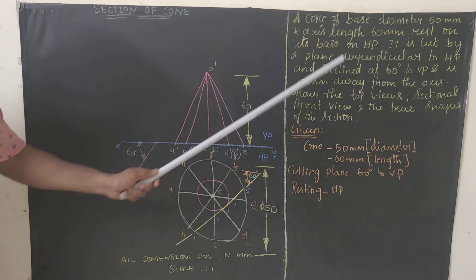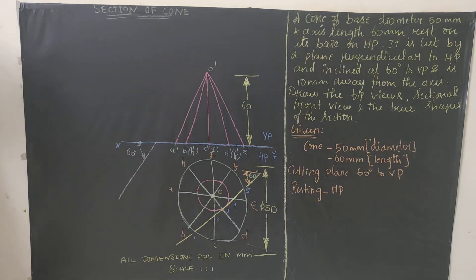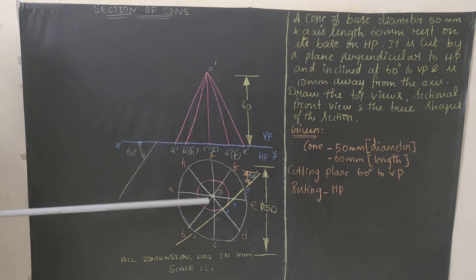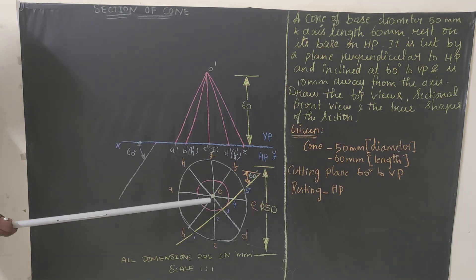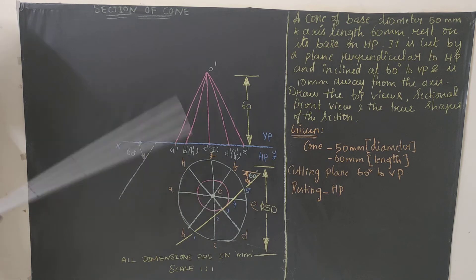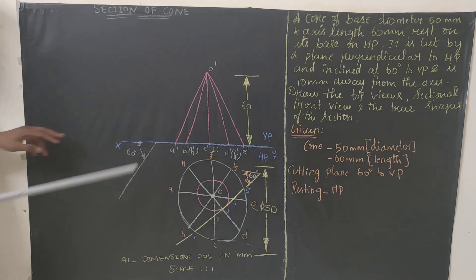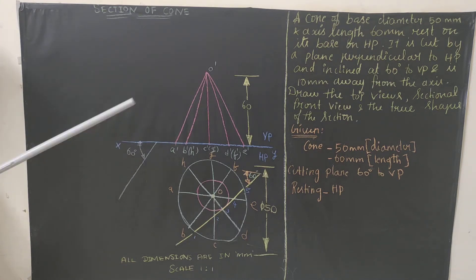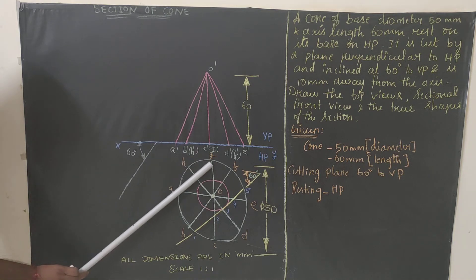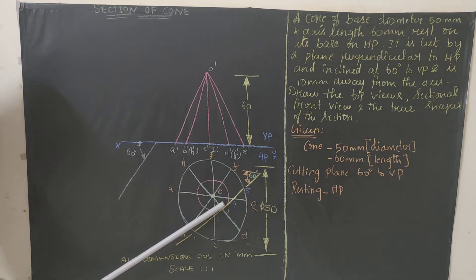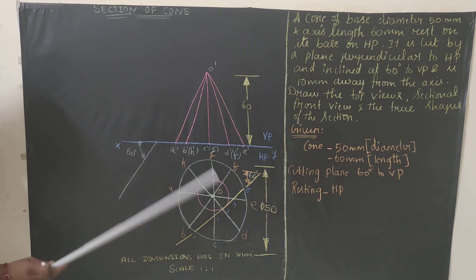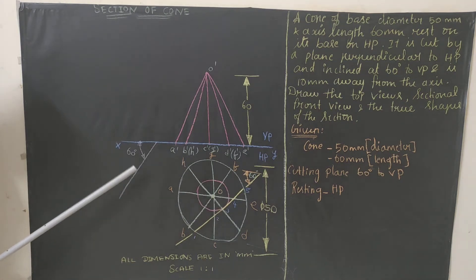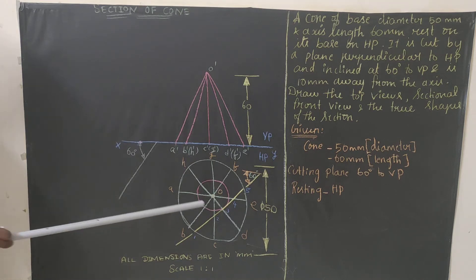Before drawing the cutting line, note that the cutting plane is 10 mm away from the axis. So take your compass, measure 10 mm, keep the center of the compass at the axis center, and draw a small circle of radius 10 mm. Then draw a reference incline line at 60 degrees and move your scale parallel to it until it is tangent to this small circle, somewhere between O and D.